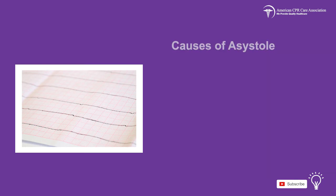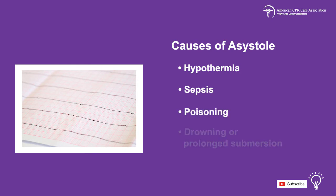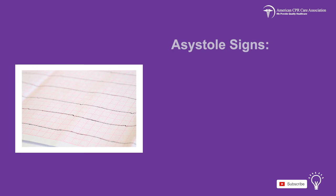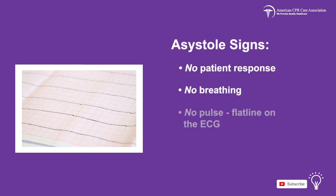Some causes of asystole include hypothermia, sepsis, poisoning and drowning, or prolonged submersion. The signs of asystole include no patient response, no breathing, no pulse, and a flat line on the ECG.